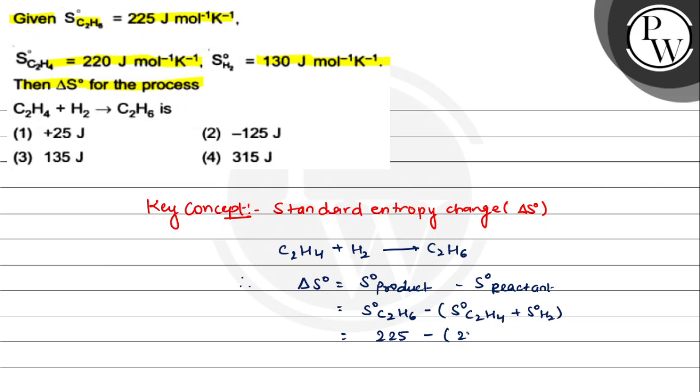Minus, this value is 220 and this is 130. So concluding all this: 225 minus this becomes 350. When we subtract, we get -125 joule per Kelvin per mole.